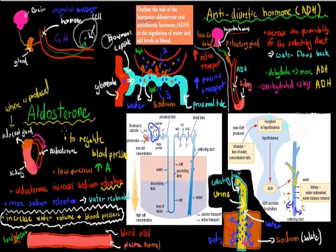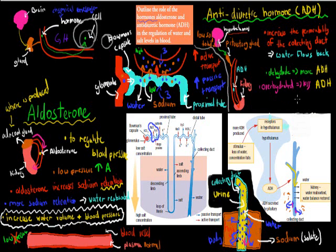To recap: the roles of the hormones aldosterone and antidiuretic hormone in the regulation of water and salt levels in the blood. Aldosterone increases sodium retention, and by increasing sodium retention it increases water reabsorption because water follows sodium as a solute. By doing so, it also helps increase blood pressure. Antidiuretic hormone increases the permeability of collecting ducts — it opens holes in the collecting duct to make sure water can pass back into our body. So if we're dehydrated, we produce more ADH so more water flows back. If we're drinking too much, we produce less ADH so the duct stays shut and water is lost in the urine.